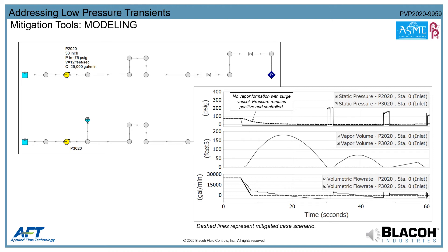In this application, computer surge modeling was used to help protect a fuel terminal loading facility in the U.S. Gulf Coast region. The project entailed a 30-inch carbon steel line over 3,000 feet long, designed to carry fuel from a plant to a shipping loading terminal, including a 20-foot elevation change to clear a railroad. The pump generated 25,000 gallons per minute at a velocity of 12 feet per second and a discharge pressure of 75 psi. The surge analysis predicted the system would go into full vacuum with cavitation imminent, and engineers used modeling software to size and place a surge vessel.